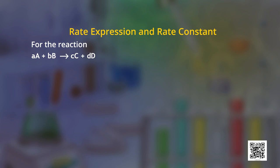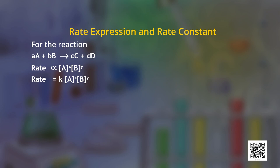The representation of rate of reaction in terms of concentration of reactants is called the rate law or rate expression. Consider a general reaction where A moles of A reacts with B moles of B to give C moles of C and D moles of D. We can write the rate law for this reaction as: rate of reaction is directly proportional to [A]^x multiplied by [B]^y. By replacing the proportionality sign with rate constant k, the equation becomes: rate = k[A]^x[B]^y, where k is the rate constant.